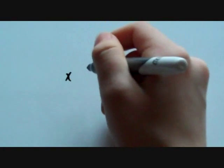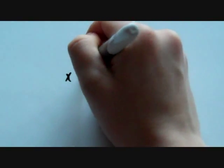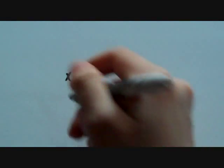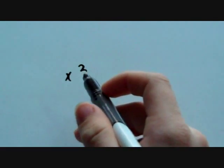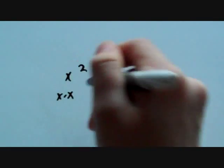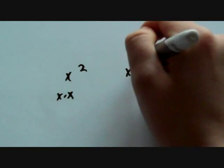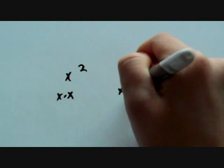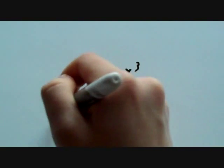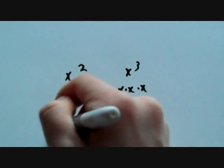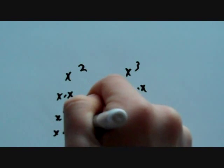To solve an exponent, we have the base number, or x in this case, and the exponent, which will be 2. The exponent indicates how many numbers are being multiplied together, which in this case will be x times x. And if you have it with cubed, it is x times x times x, and so on for infinity.